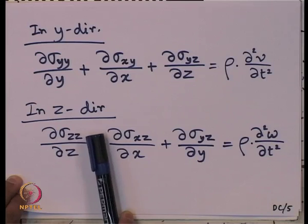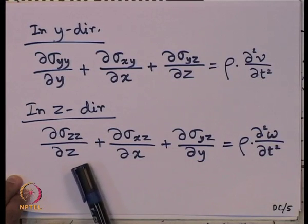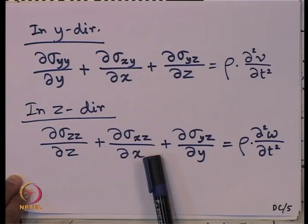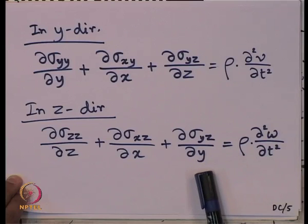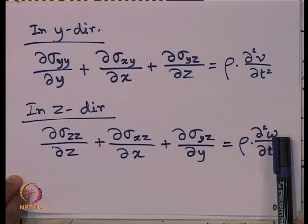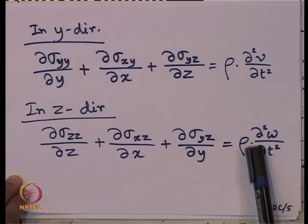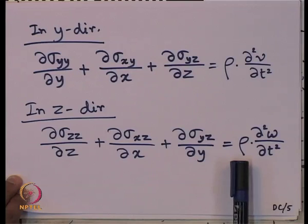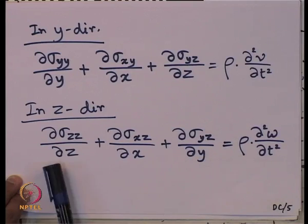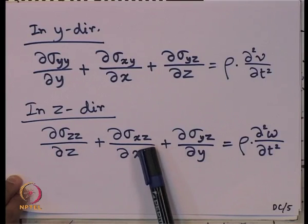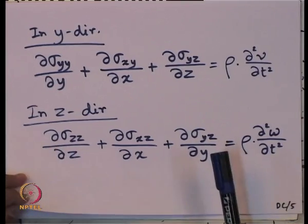Similarly, for z-direction, the governing equation of motion is del sigma_zz by del z plus del sigma_xz by del x plus del sigma_yz by del y equals rho times del² w by del t², where w is the displacement along z-direction. Del² w / del t² indicates the acceleration in z-direction, sigma_zz is the normal stress along z-direction, and sigma_xz and sigma_yz are shear stresses.